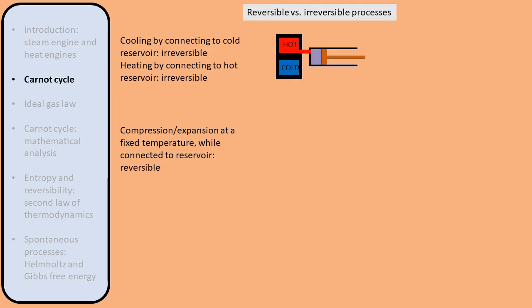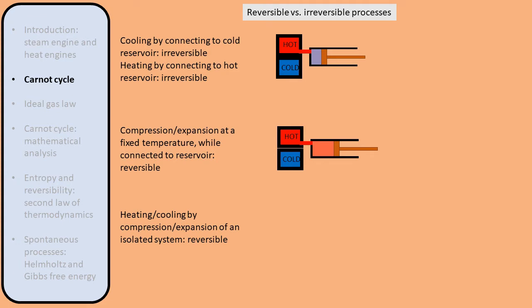Now let's look at some processes that are reversible. Suppose we connect a hot gas to the hot reservoir. If we slowly move the piston back or forth, then the gas remains at the temperature of the reservoir. The animation makes sense if we play it either forward or backward, so the process is reversible. Compression and expansion at a fixed temperature while connected to a reservoir is a reversible process. We can also look at what happens to a system not connected to any reservoir, so no heat can flow in or out. If we pull the piston backwards the gas cools down, and if we push it forward the gas heats up again — this process is also reversible.